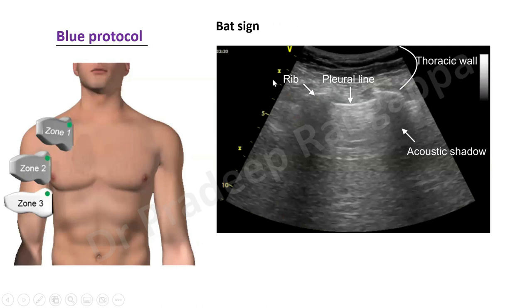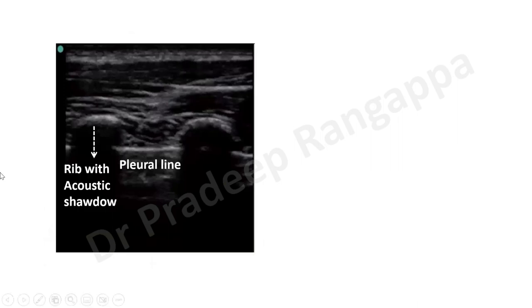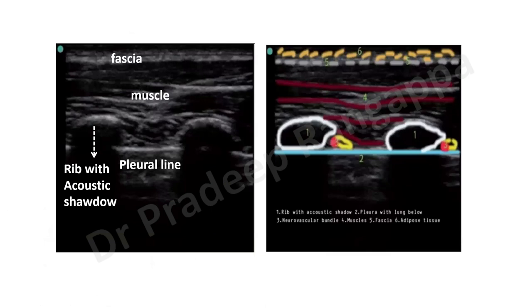When you put the probe, you see something called the bat sign. It looks like this: you have the pleural line and the rib shadows forming the wings. You look for lung sliding along the pleural line. This is the pleural line; these are the ribs with acoustic shadow; and here you have the muscle, fascia, and neurovascular bundles. This bat sign is the first thing you see and is shown schematically.